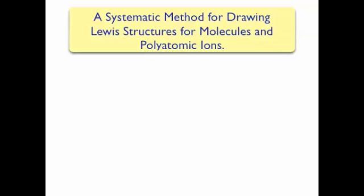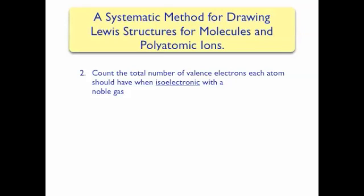Our systematic method has a second step that many methods don't have. However, this step is crucial for determining the number of bonds we will draw in our Lewis structure. This step counts the total number of valence electrons each atom will have when it is isoelectronic with a noble gas. Every hydrogen atom wants to have 2 valence electrons, just like helium, so we count 2 electrons for each hydrogen atom. For each non-hydrogen atom, we count 8 valence electrons, since all non-hydrogen atoms want to have noble gas configurations.